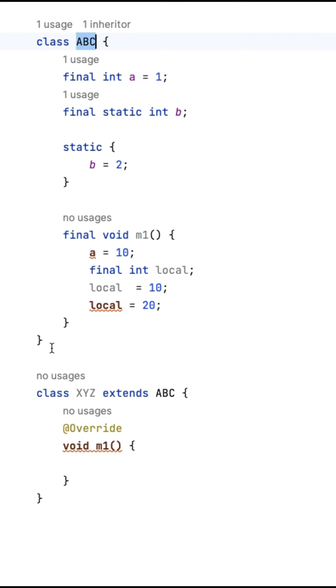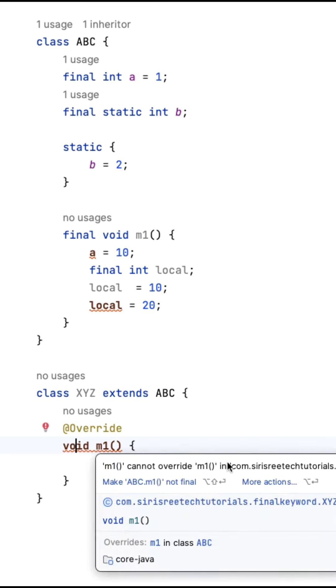This is a final method in ABC. I created a class XYZ that extends ABC, and here I am trying to overwrite this final method. It is giving a compilation error that m1 method is a final method and cannot be overwritten.